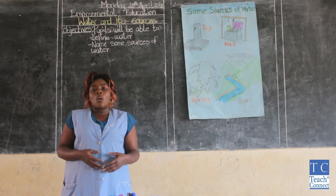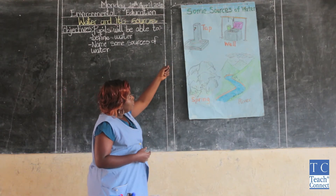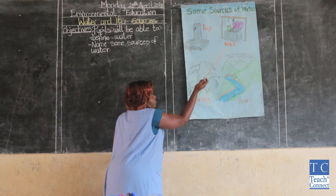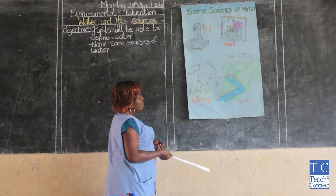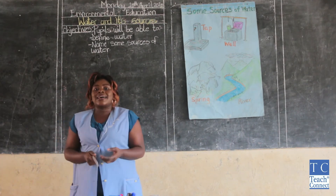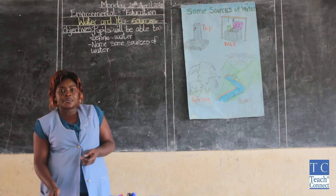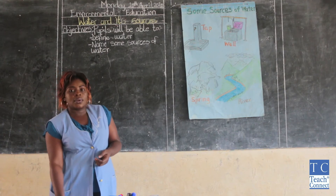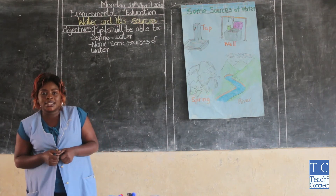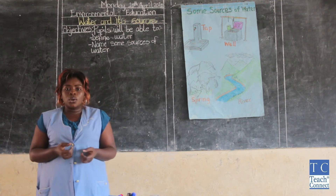Now, apart from tap, well, and river, we also have spring. What are some other sources of water? River — good. Ocean — good.